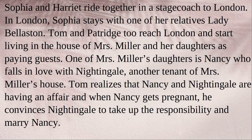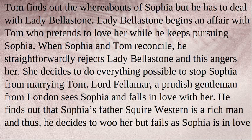Sophia and Harriet ride together in a stagecoach to London, where Sophia stays with her relative Lady Bellaston. Tom and Partridge also reach London and start living as paying guests in the house of Mrs. Miller and her daughters. One of Mrs. Miller's daughters, Nancy, falls in love with Nightingale, another tenant of the house. Tom realizes that Nancy and Nightingale are having an affair, and when Nancy becomes pregnant, he convinces Nightingale to take responsibility and marry her.